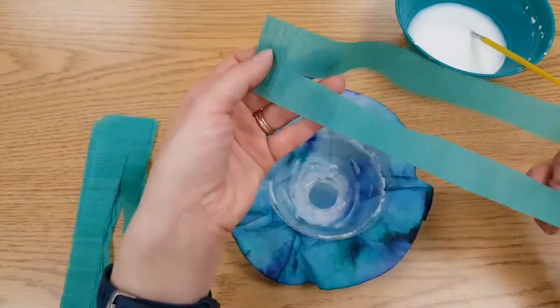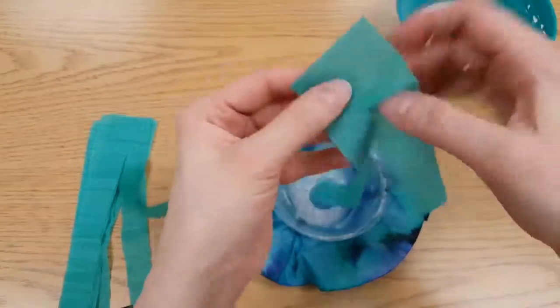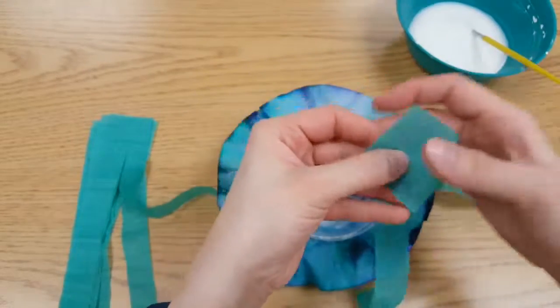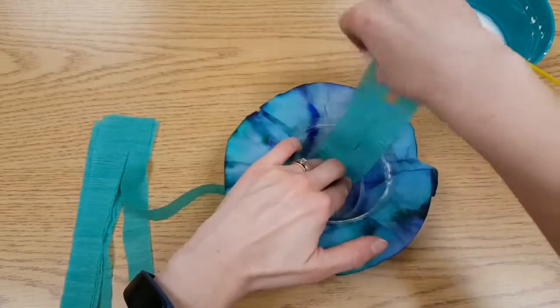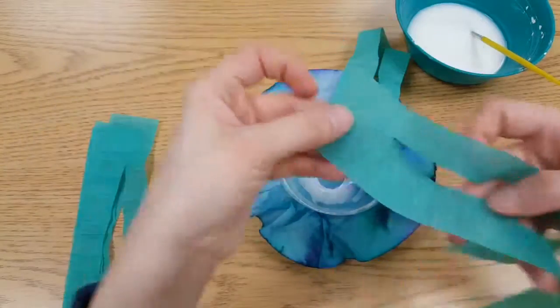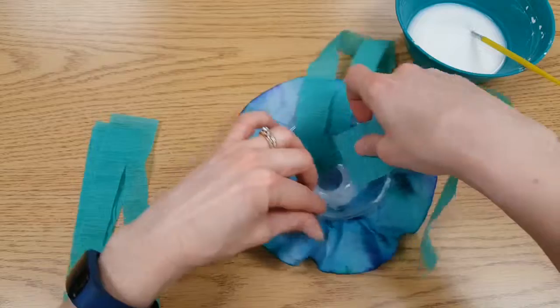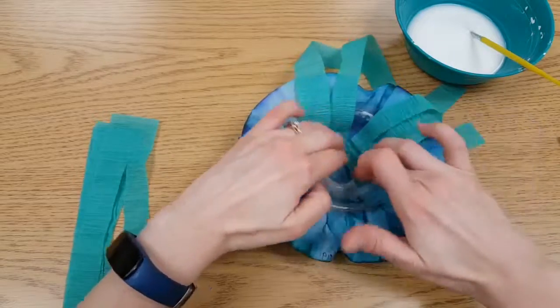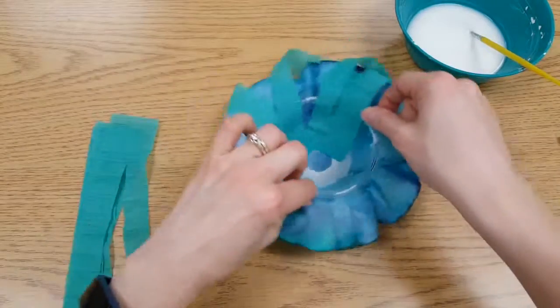All right here's the crepe paper. So here's where it's still connected. This is the part that's going in the glue. I'm going to press down gently and pick up another one. And stick it in the glue. Press down gently.